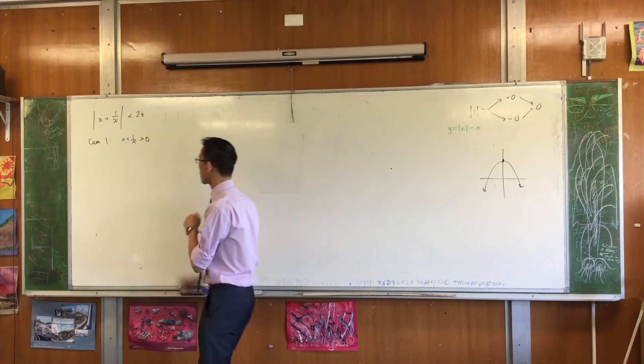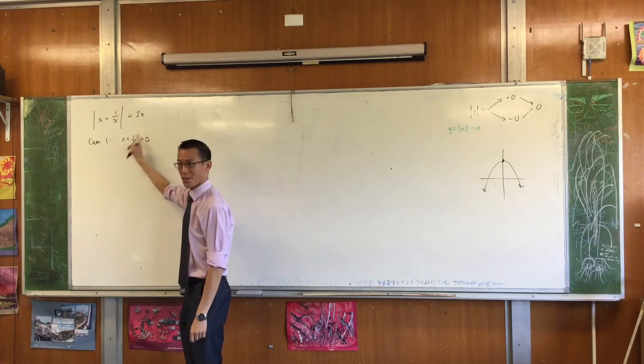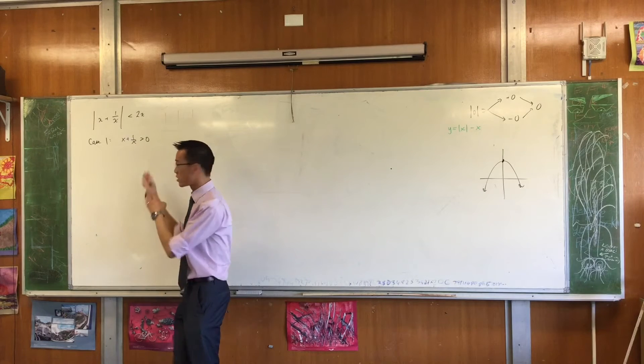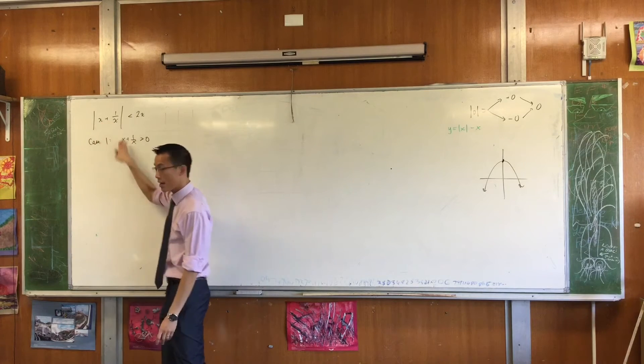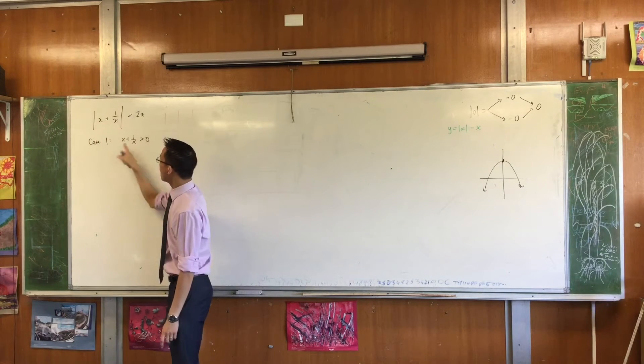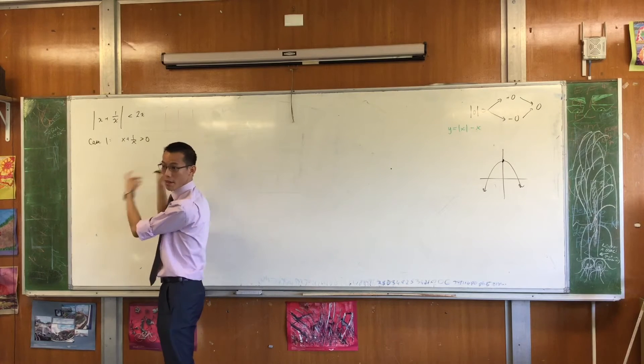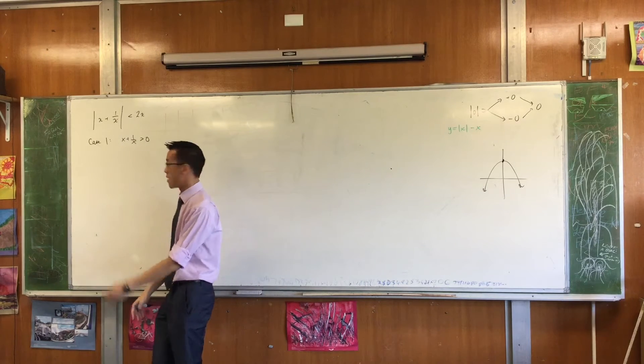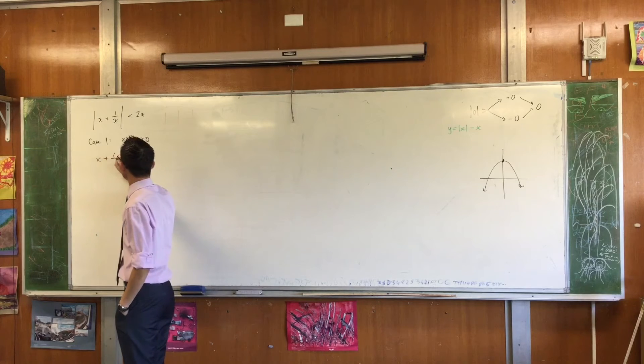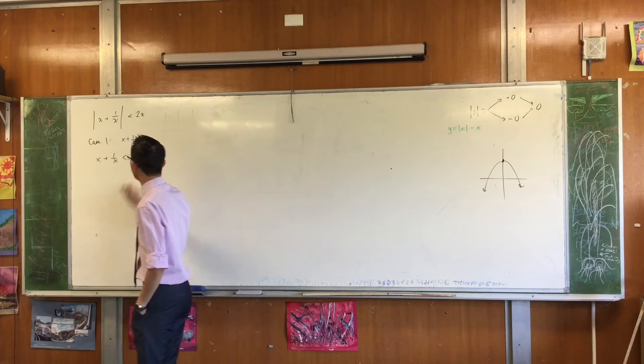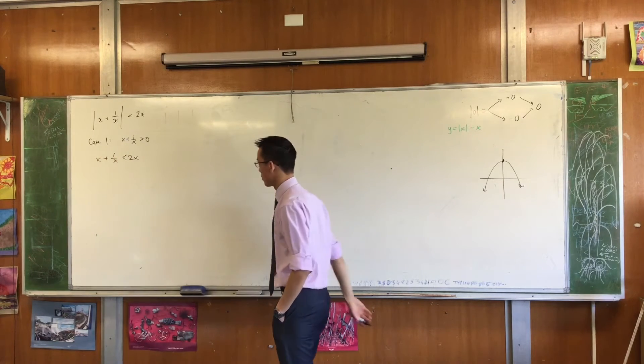So if this is true, which by the way I don't know when that is true, I'll find out in a minute, but it's whatever is inside the brackets, whenever that is true, the absolute value of that is just that. I don't need to apply any minus signs to it. So let me write that out. x plus one on x is less than 2x, and I have to try and solve this thing, okay?